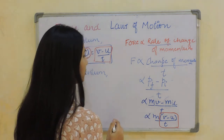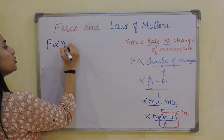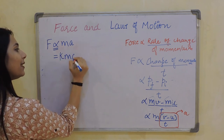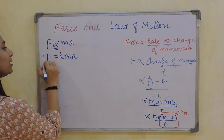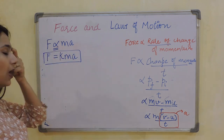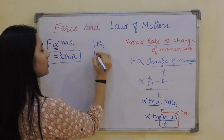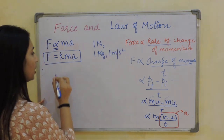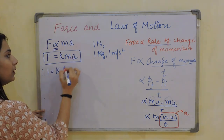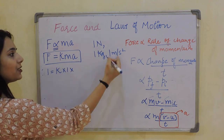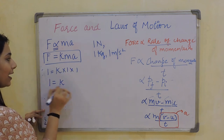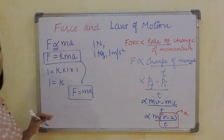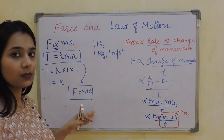Removing the proportionality sign, we add a constant of proportionality K: F = K·MA. If a force of 1 Newton acts on a body of 1 kg producing an acceleration of 1 m/s², then K equals 1. So the equation simplifies to F = MA. This is Newton's second law equation.